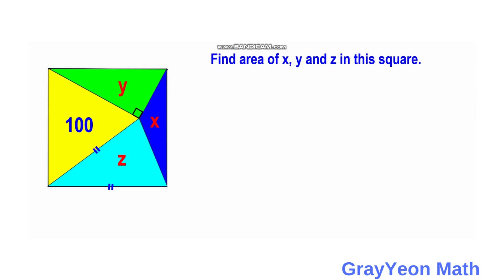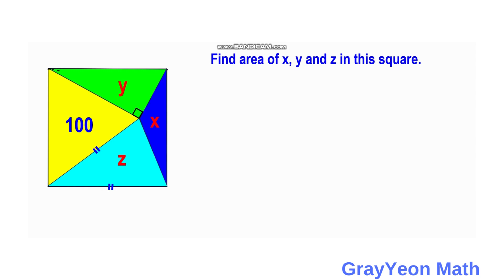The first thing we have to do is draw a quarter circle inside the square, because this line is actually congruent with this side of the square, and since this is a square, this side should be equal to the other side. So we can draw a quarter circle.